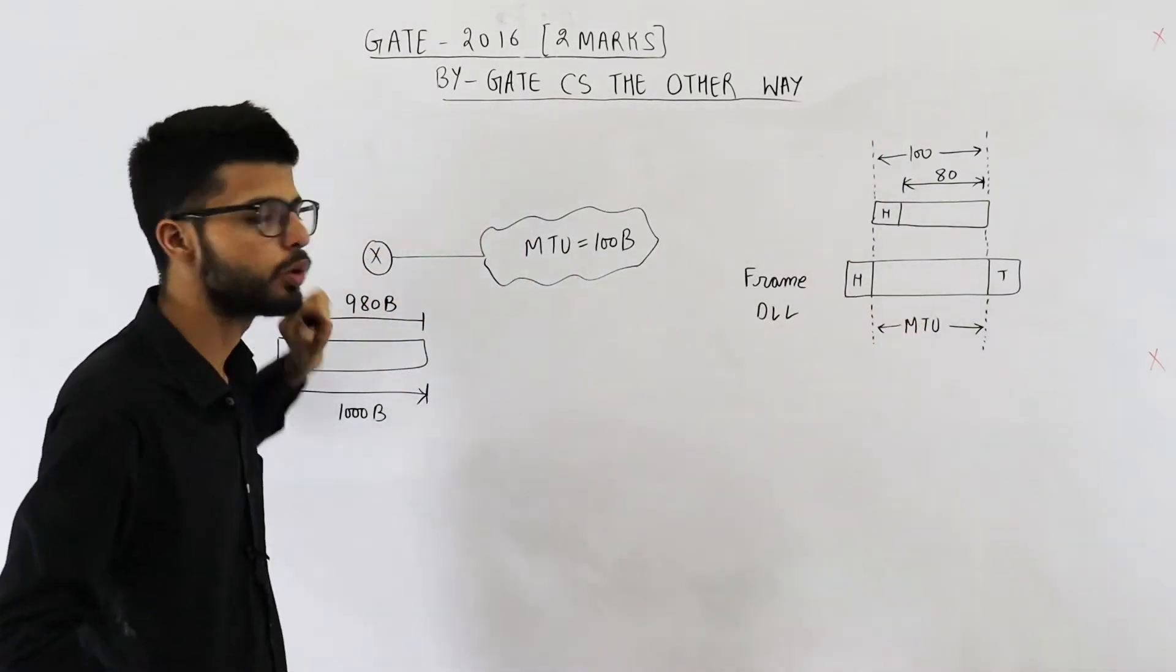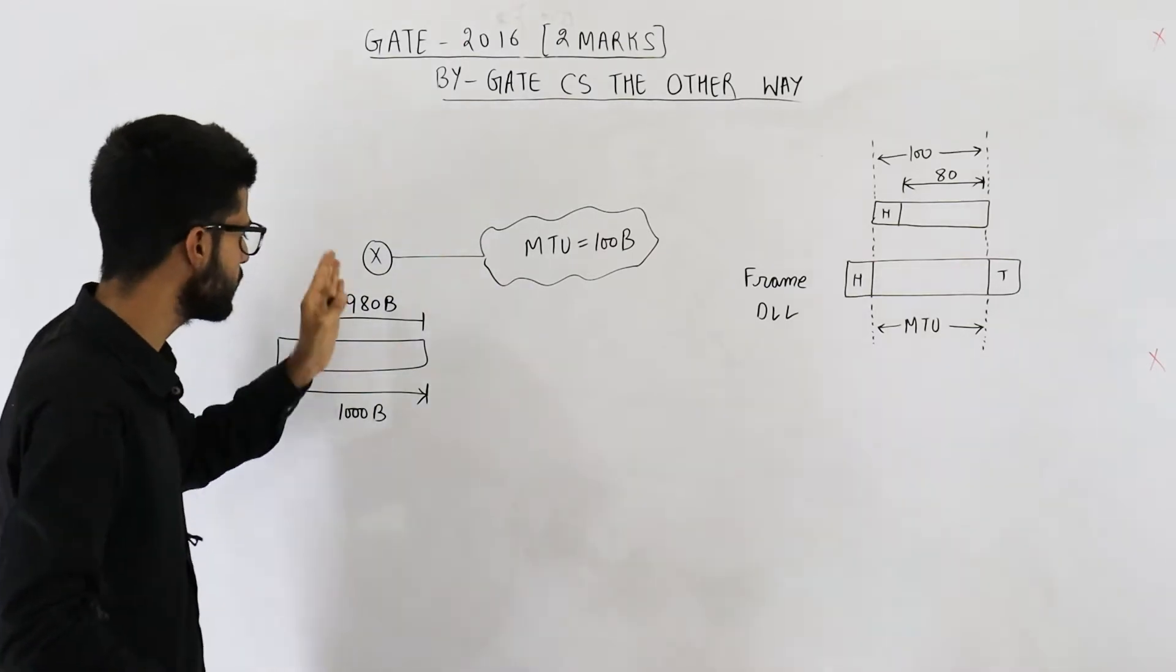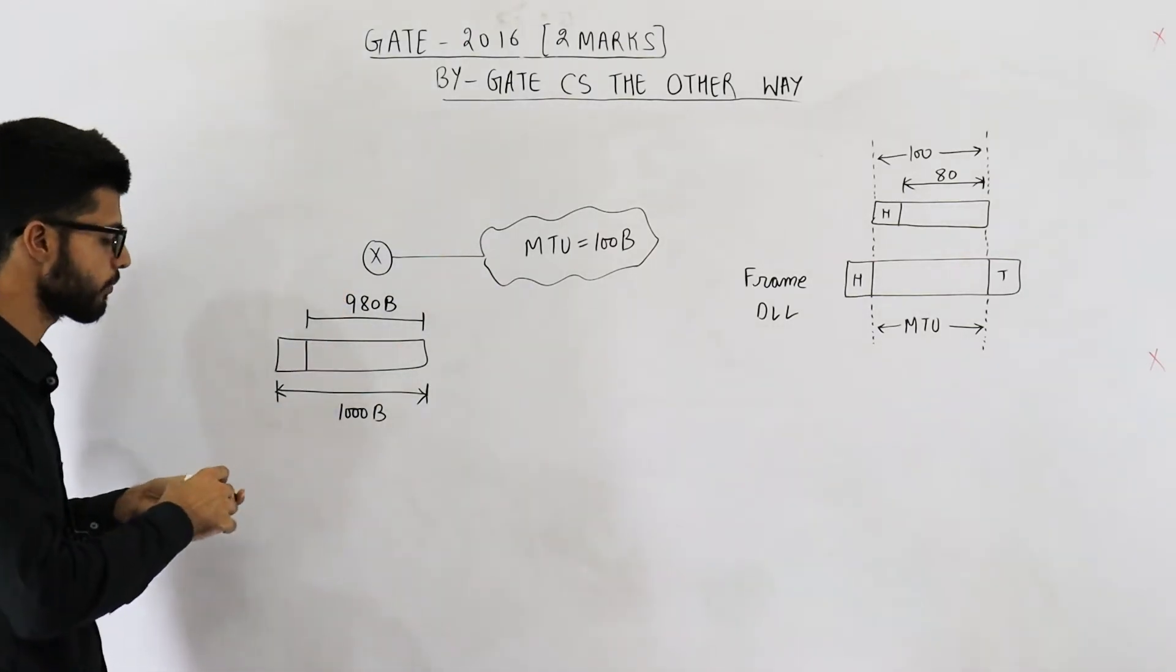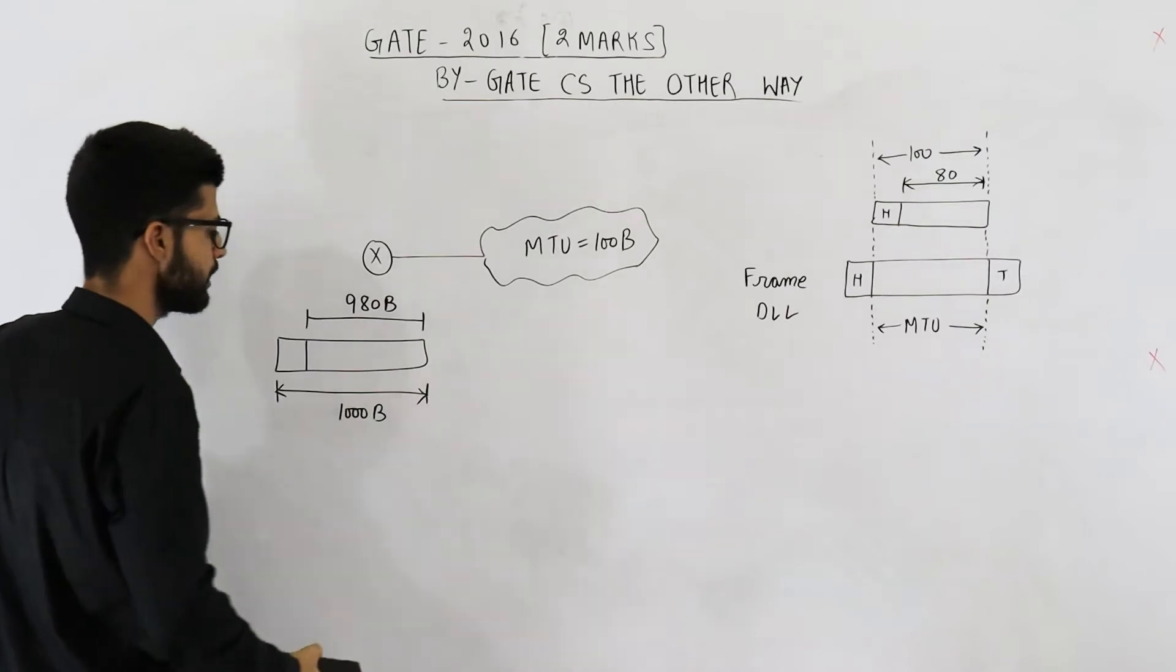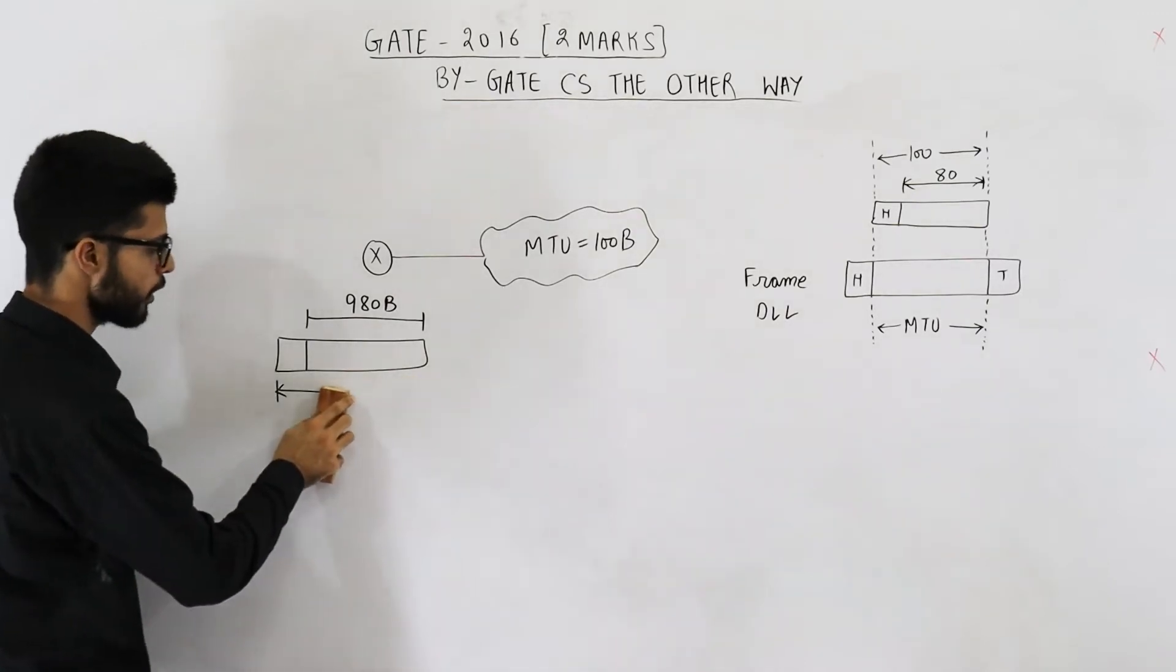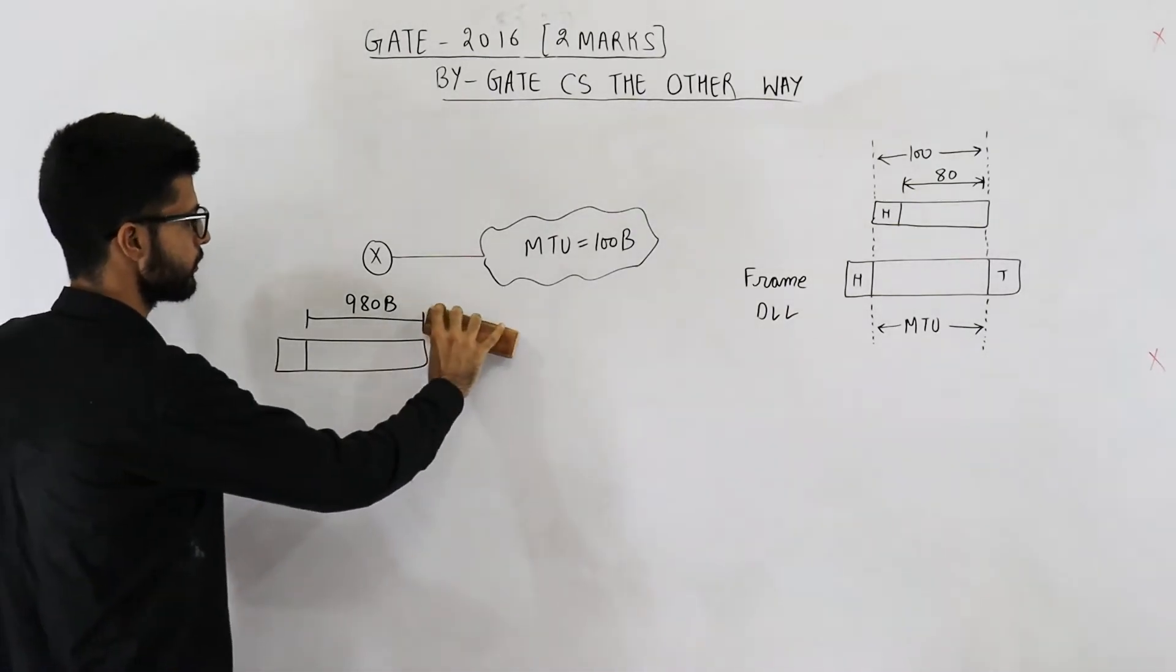All of these numbers are known to this router. So router will be fragmenting this datagram. For fragmentation, first of all router will remove the IP header.